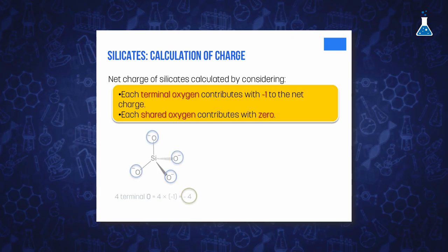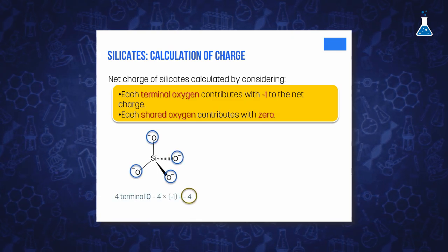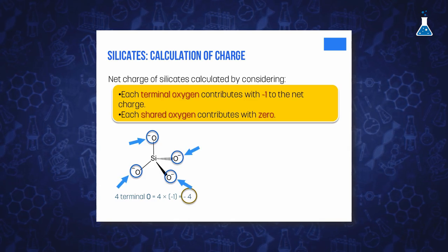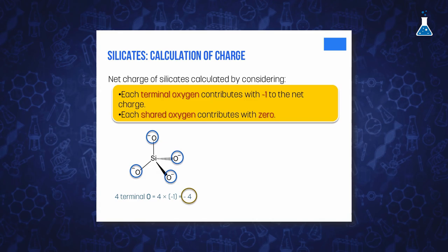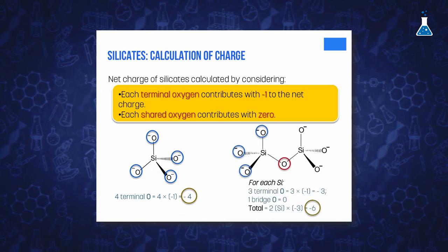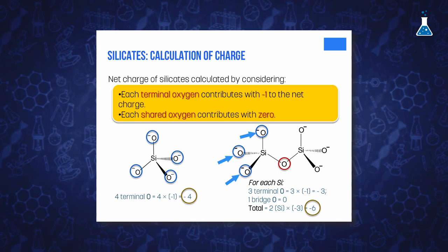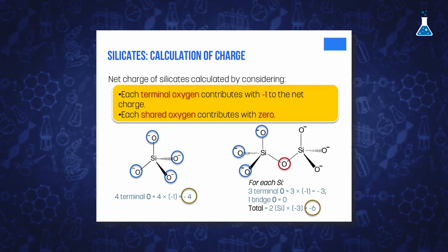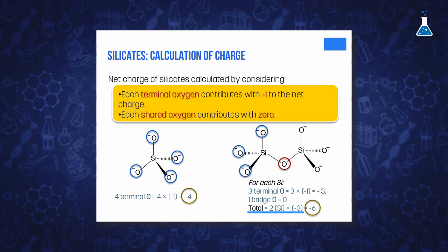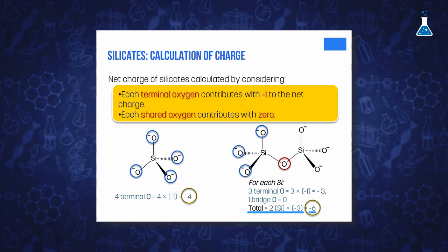For instance, the nesosilicate SiO4^4- will have four terminal oxygen atoms which each contribute with minus 1, giving a total charge of minus 4. In the case of sorosilicate, we have three oxygen atoms which each contribute with minus 1 for each silicon, and one shared oxygen which does not contribute to the charge. That means that the charge for each silicon atom will be minus 3. As we have two silicons, the net charge will be 2 times minus 3, which will give us minus 6 as the net charge. These rules are valid also for silica and for more complicated structures with more shared tetrahedra.